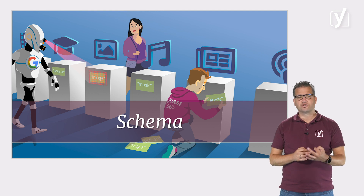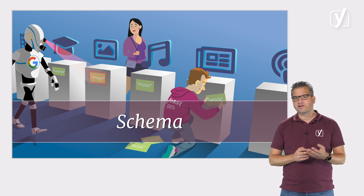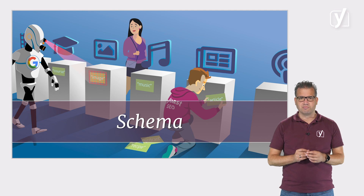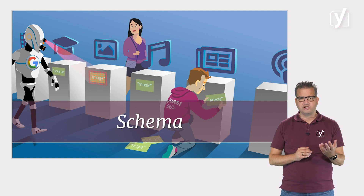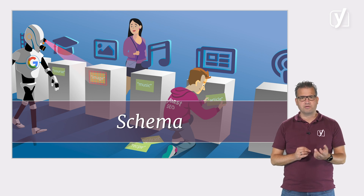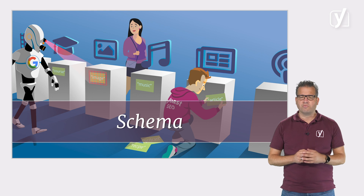Schema is code that lets search engines know the meaning of your content. There are various types of schema, depending on what you want to describe. For example, there is a schema type for recipes, news, videos, jobs, events, etc. You need to use the right one to get the right results.